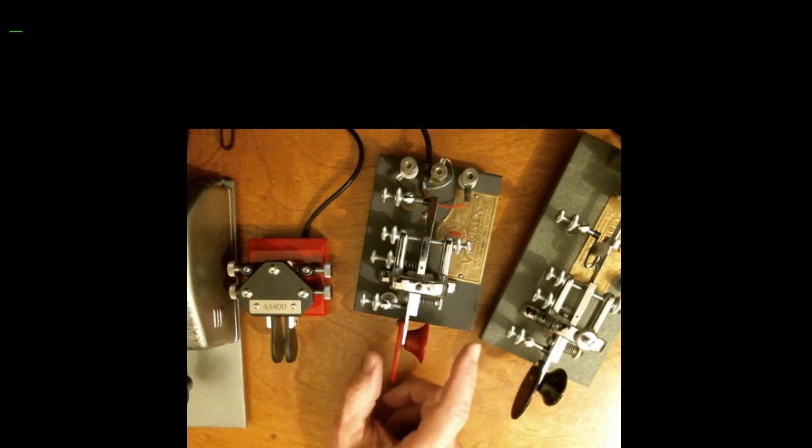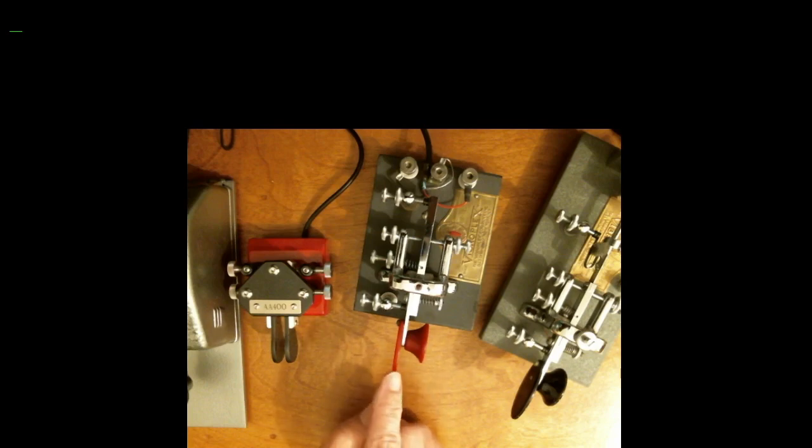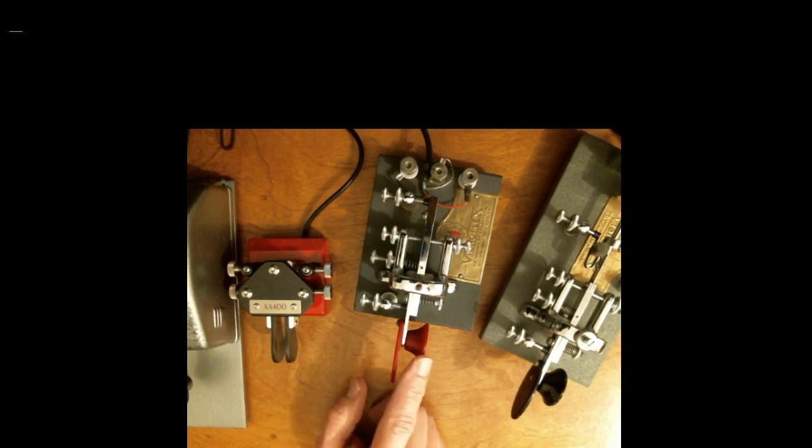Let's remember that Morse code is made up of elements. One element is a dit, and a dah is three times longer than a dit, so that's three elements. When you're sending characters in a word, you want to have a three-element space between each of the letters in the word. What's three elements? Three elements is a dah. So depending upon the speed at which you're sending, a dah is the amount of space you want to put between the characters in a word.